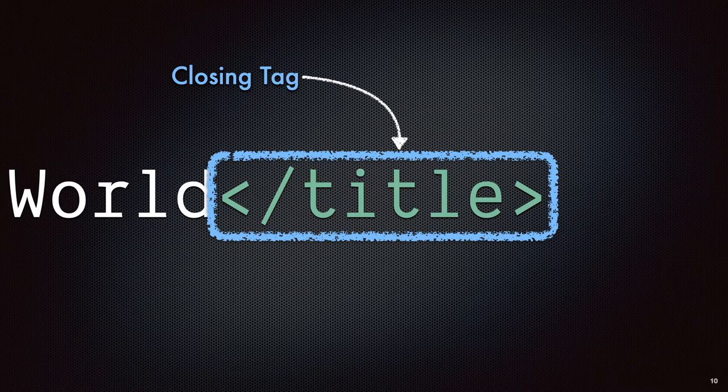So it's balancing out the opening tag with just the addition of the forward slash right after the initial character. You've got that less-than symbol and then the forward slash, and that denotes the closing tag.